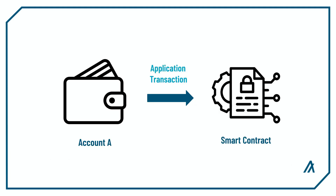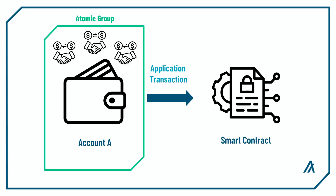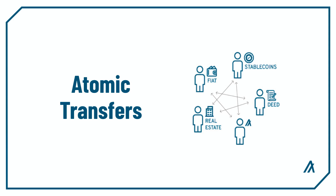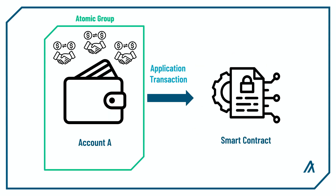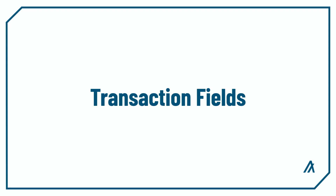When we call a smart contract with an application transaction, you may need to access information from other transactions within the same atomic transaction group. As a quick reminder, an atomic transfer is an Algorand feature that lets you group multiple transactions and execute them simultaneously. When you need information about other transactions in the atomic group, you use the transaction fields provided by PyTeal.